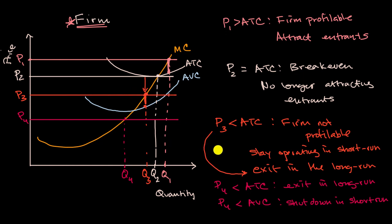But because P sub three is greater than your average variable cost at the rational quantity, you would stay operating in the short run. And then the last scenario, of course, is P sub four where the price gets so low that it just doesn't make sense to even operate another moment.